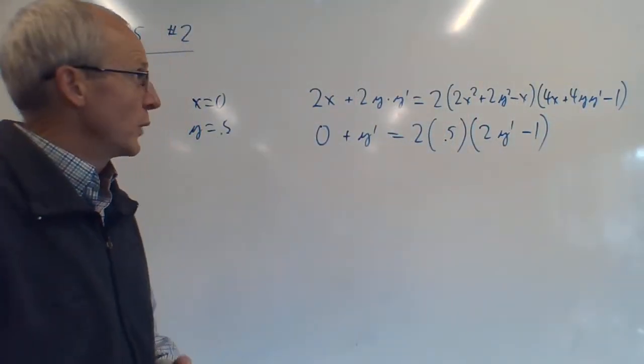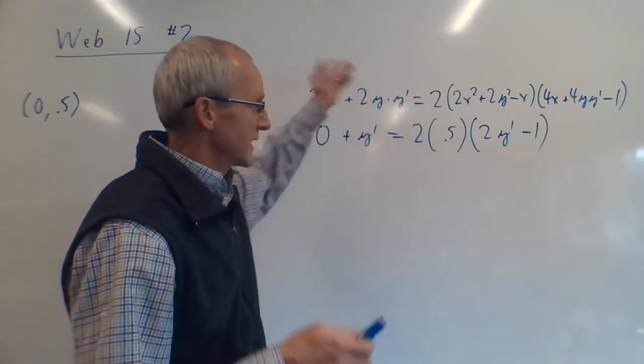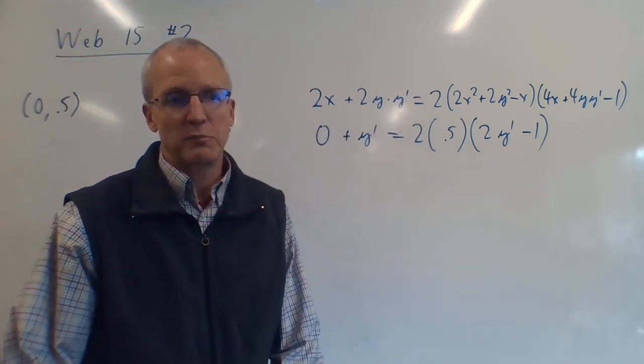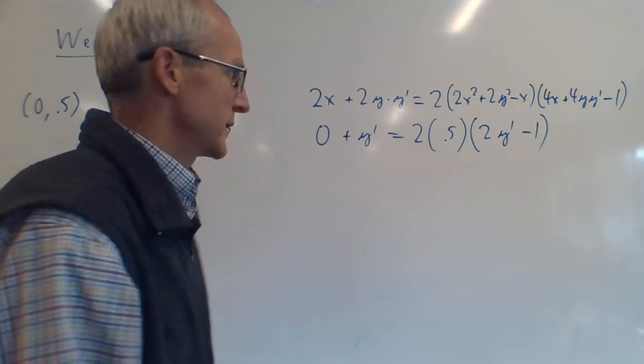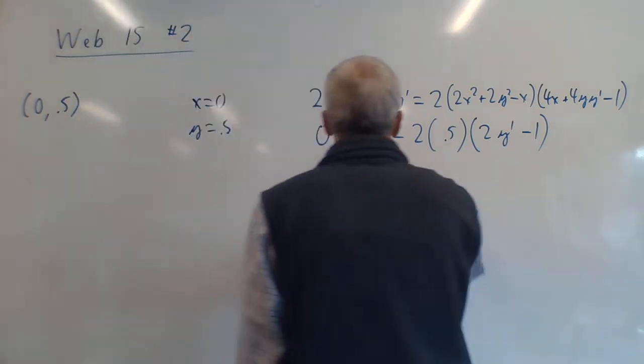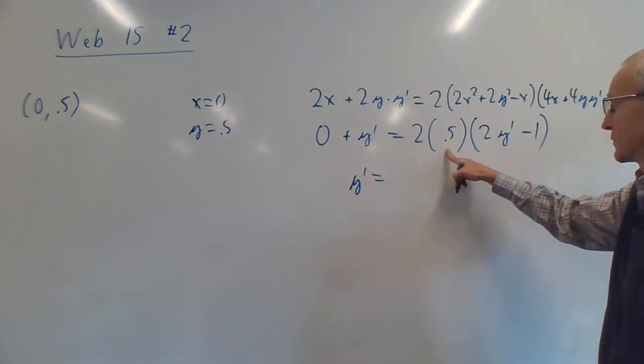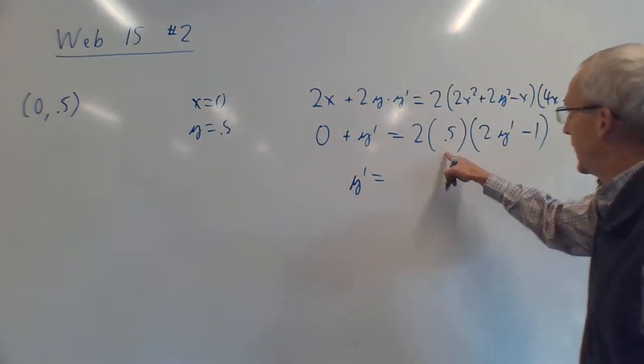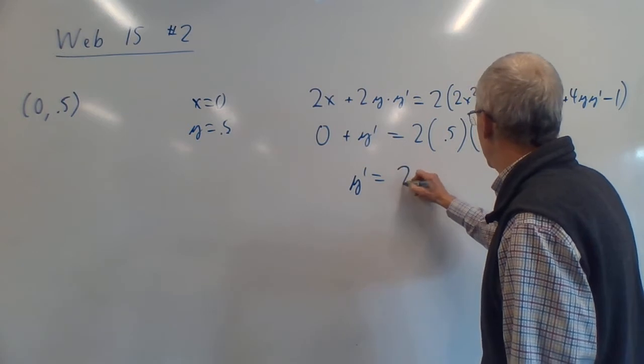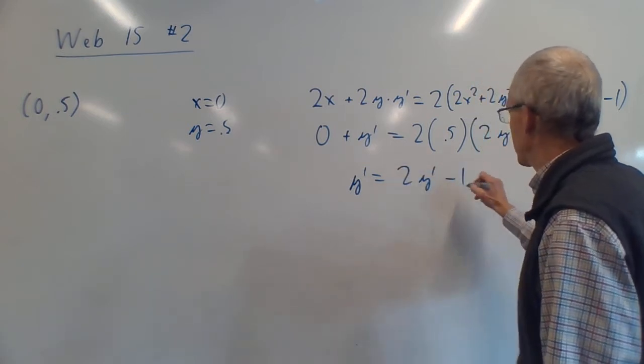Way easier than solving for y' with this thing. So always do that. As soon as you take it, plug in the numbers. It makes it way easier. Okay, so when I do that I get y' = 2 times 0.5 is just 1, so over here I just have 2y' - 1.